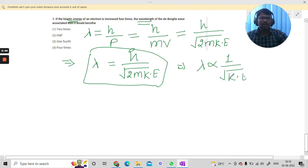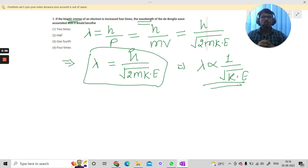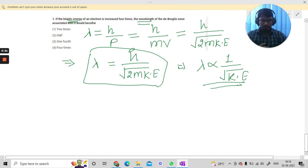From here we can see we are having a relation like de Broglie wavelength is inversely proportional to the square root of kinetic energy. So from here we can see if we are going to increase the energy four times, we are going to have the wavelength, that is de Broglie wavelength, that will become half.